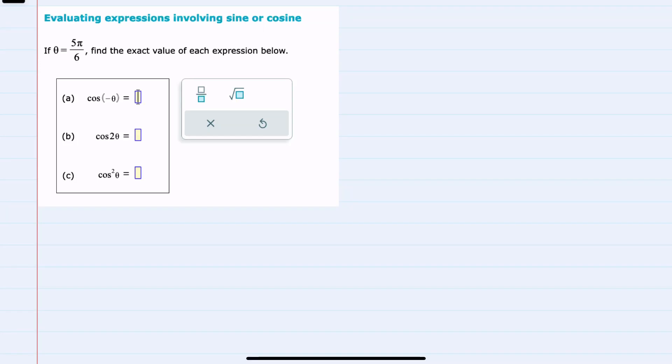In this video, I'll be helping you with the Alex problem type called Evaluating Expressions Involving Sine or Cosine. We're given the value theta equals 5π/6 and asked to find the exact value for a, b, and c.